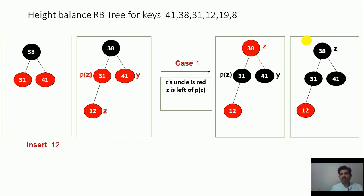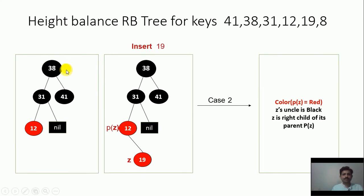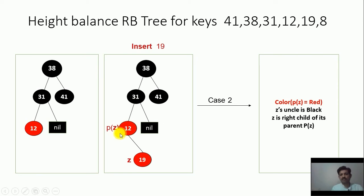Now we have to insert node 19. The 19 will be placed at the right side of 12. Insertion is taking place like a binary search tree insertion: 19 is compared to 38, then 31 — it will be placed at the left side — then compared with 12, and since it is greater than 12, it will be placed at the right side. This is our new node. The color of the new node is red. This is g and p of g is red, so we have to apply cases. Now check for the uncle.